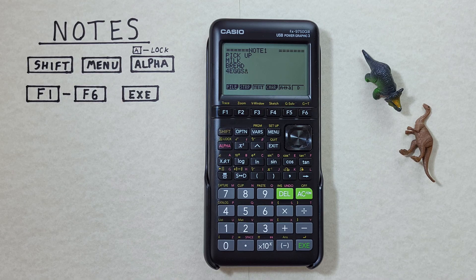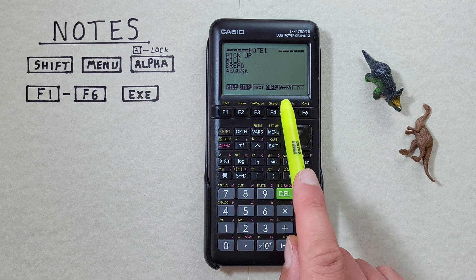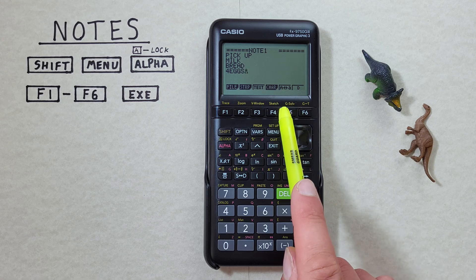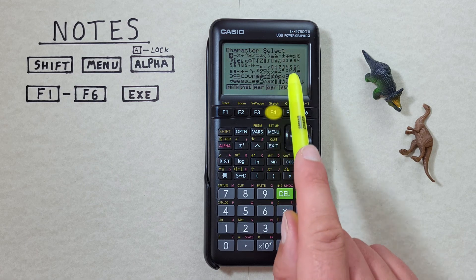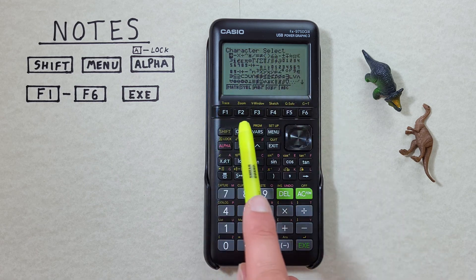If we want to get fancy with it we can use the F5 to turn on and off capitals. And the F4 menu to put in a whole bunch of different characters if we want.